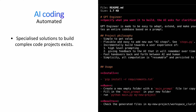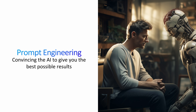You also have automated AI coding applications. This example is from GPT Engineer — specialized solutions to build complex coding projects. You make a specification file where you explain everything you want in the project, and it will automatically generate all the code and code files for you. You can also do that with AutoGPT, which is kind of like an autonomous agent solution. All of this requires the GPT API, which means it costs money to use after a certain token size.